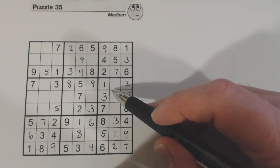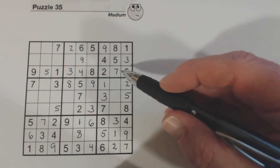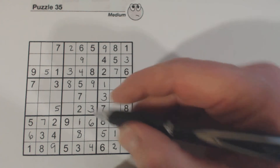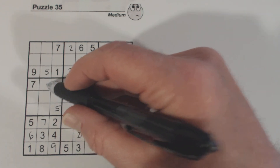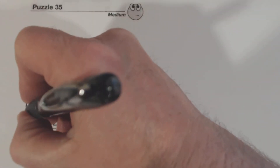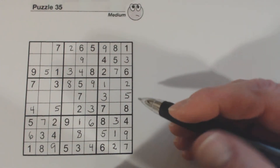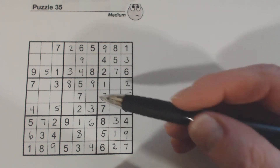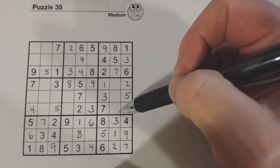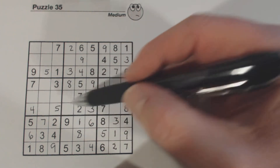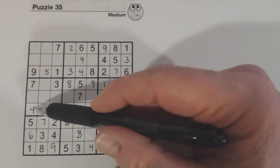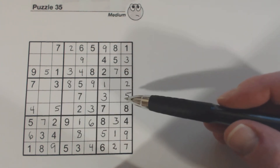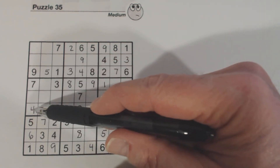Now we've only got two numbers left in this row — we're missing a four and a six. Actually in the pop quiz we put a four in this position right here. We're missing one, four, six, and nine in this row. We've got a one, six, and a nine in this column already, so we knew that was a four.